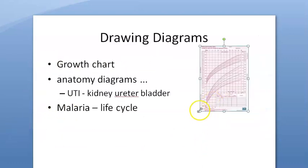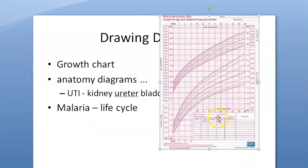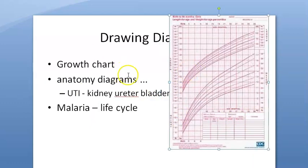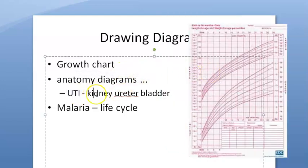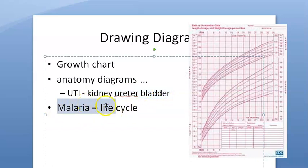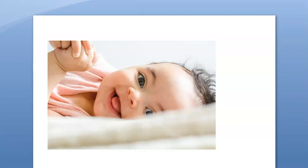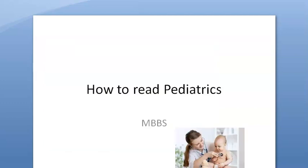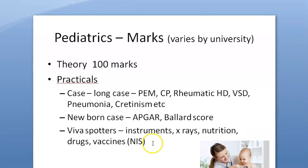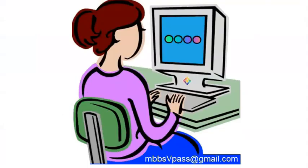Draw diagrams — they will help you. Practice plotting one growth chart. Draw anatomy diagrams; for a UTI question, draw the kidney, ureter, and bladder. For malaria, draw the life cycle. Diagrams make examiners more interested in correcting your paper. Overall, pediatrics is a relatively low-volume subject compared to medicine, surgery, or obstetrics and gynecology in MBBS. Read it thoroughly and you will sail through. All the best!